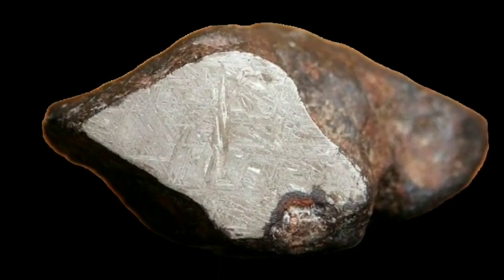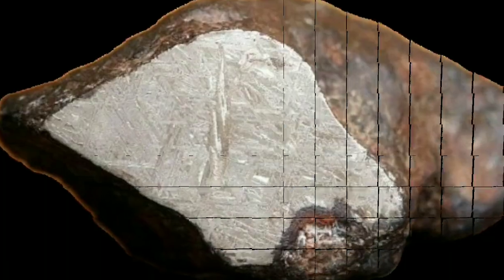Stony meteorites make up the majority of meteorite finds and can be further classified into two subgroups: chondrites and achondrites. Chondrites are the most primitive and contain tiny spherical particles called chondrules, providing a glimpse into the conditions of the early solar nebula.